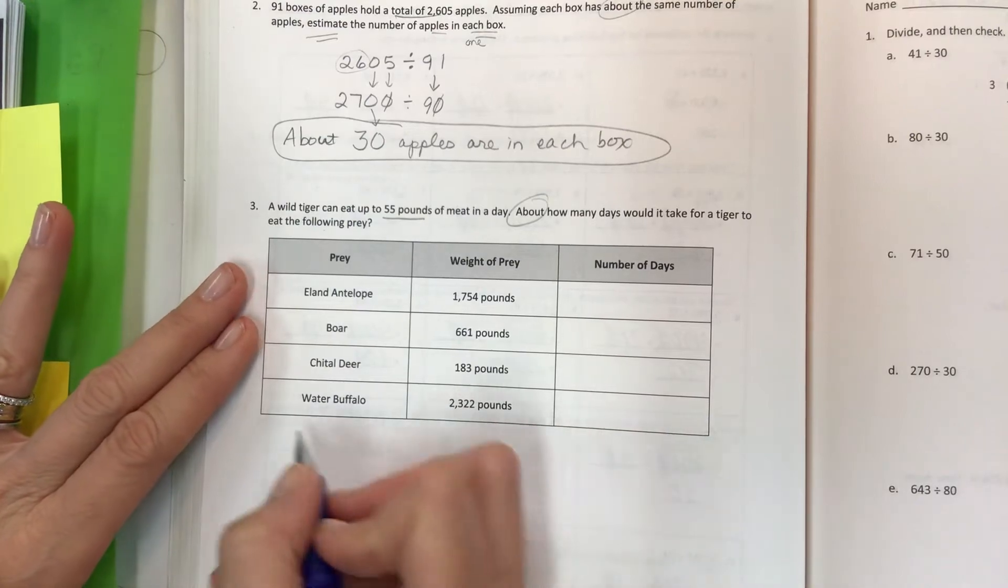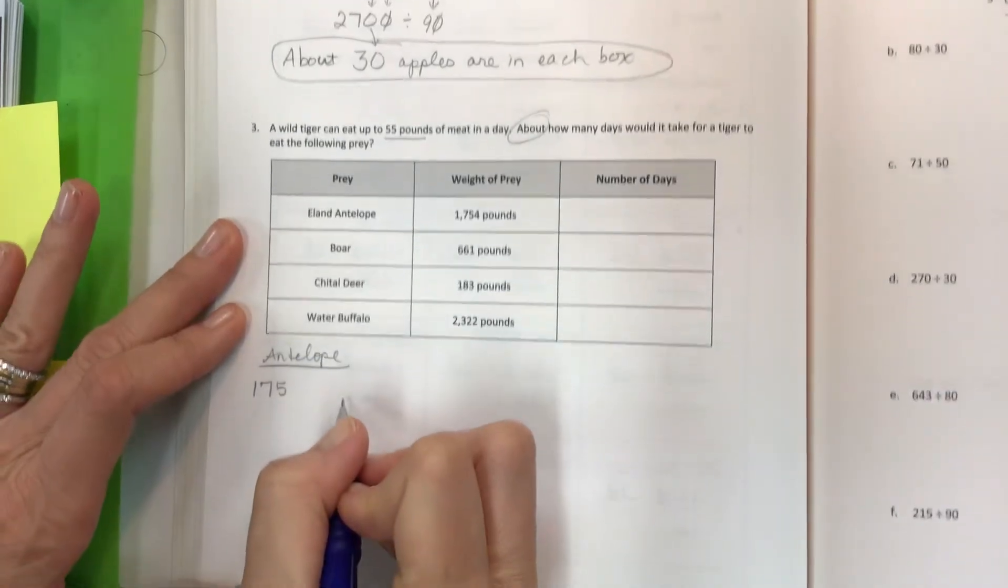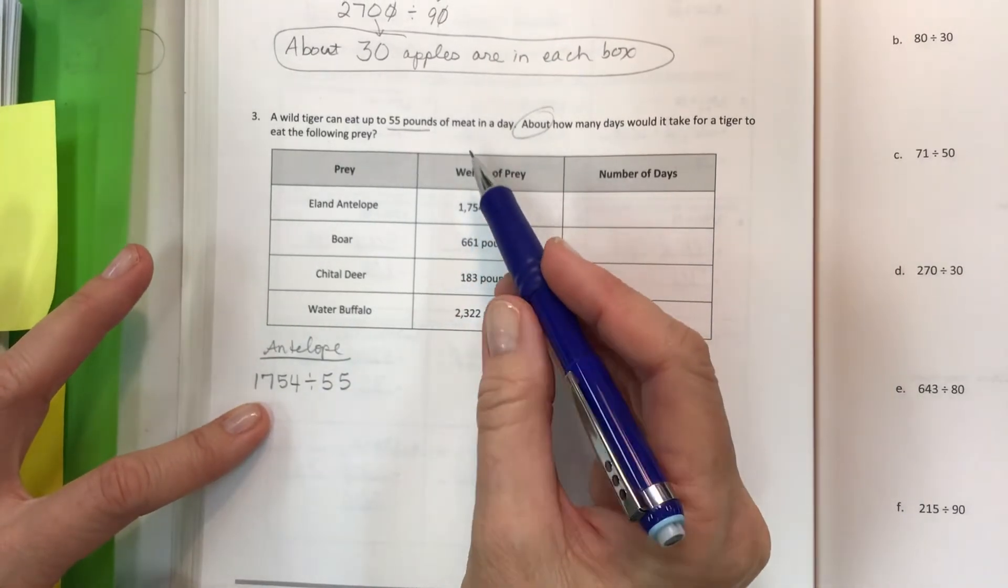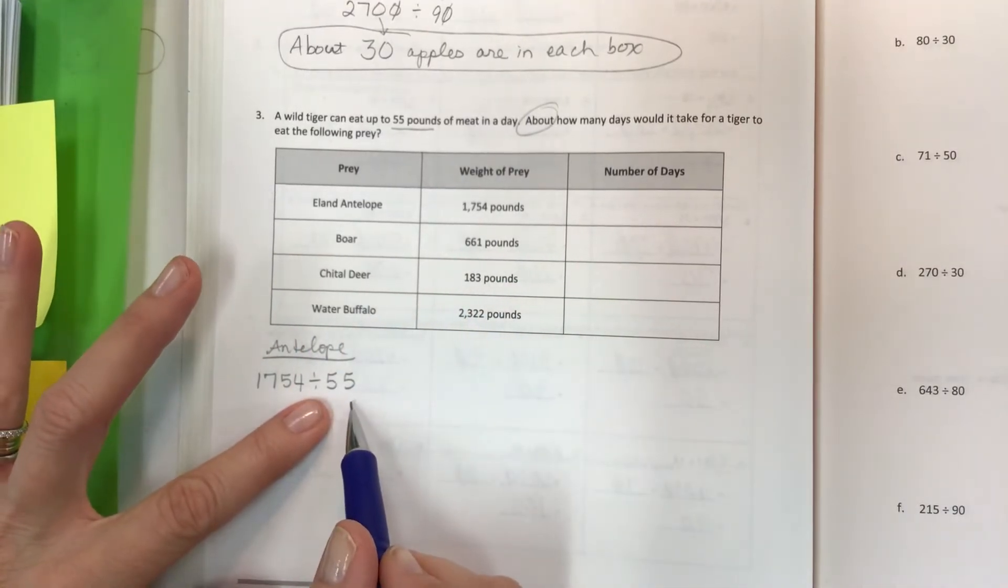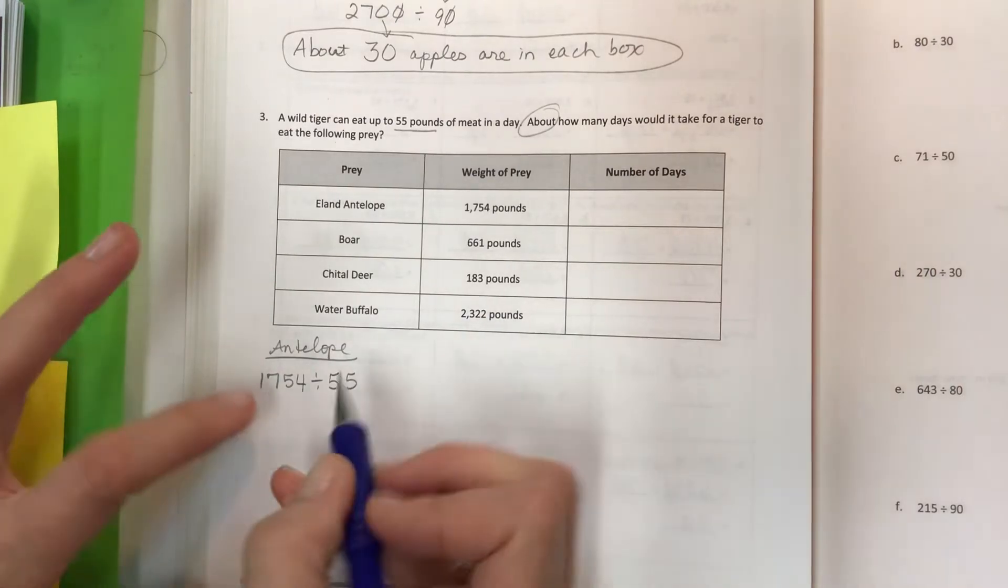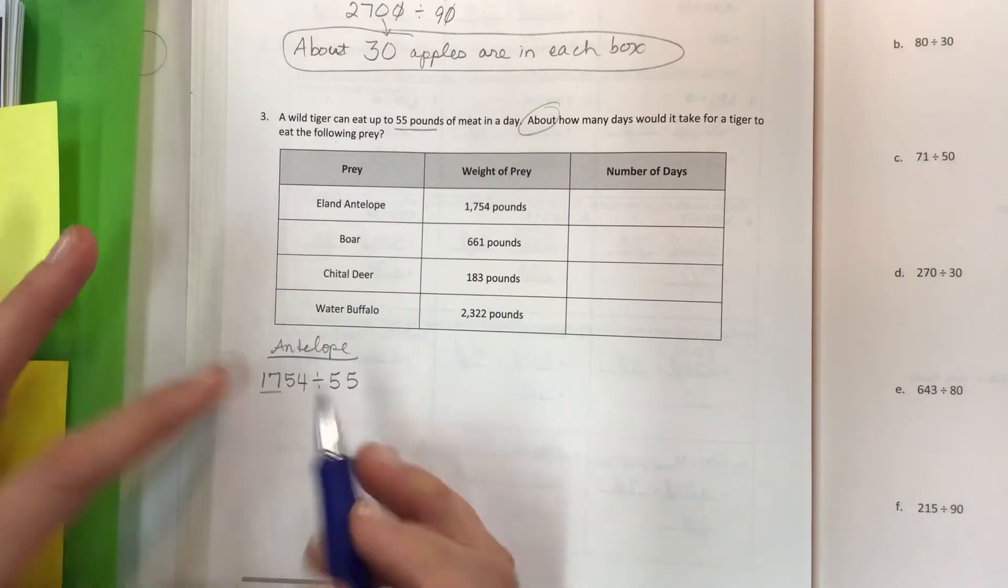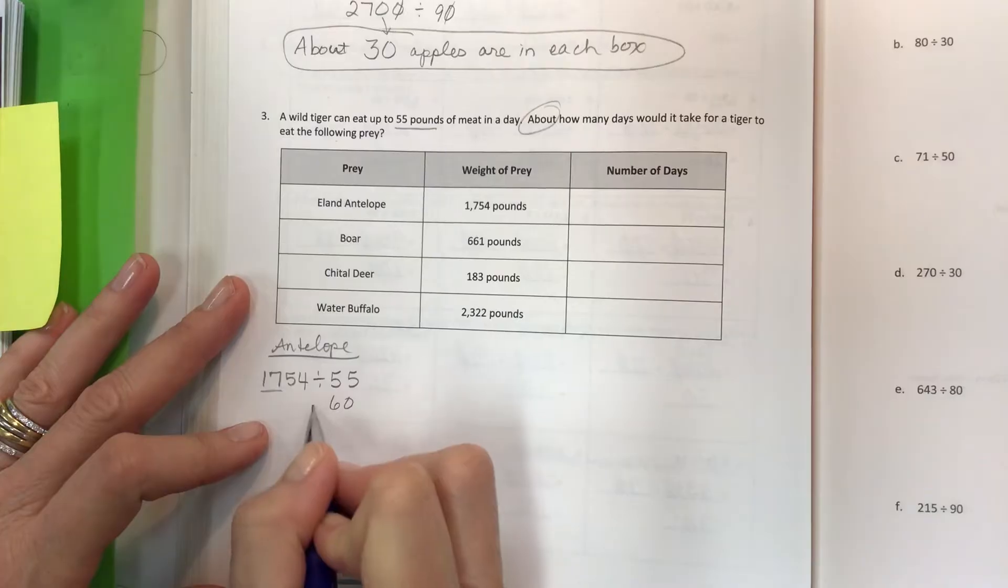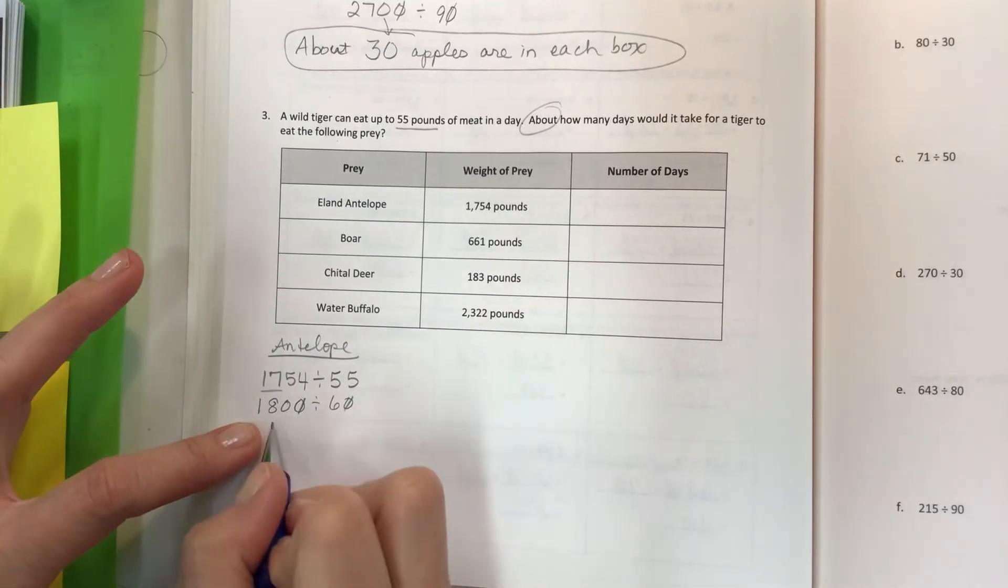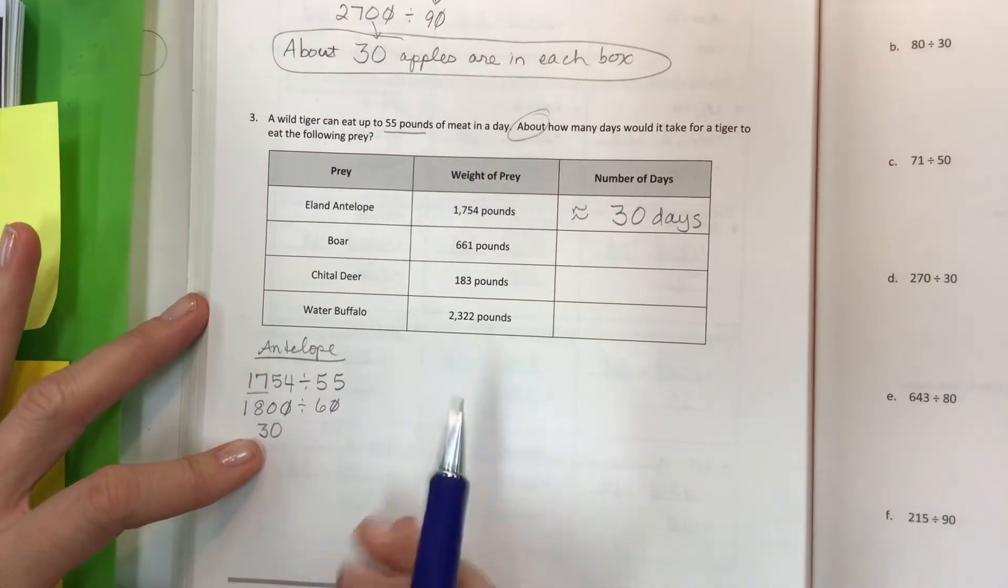Let's take the total amount of prey for each one and set up our problems, and we only need to estimate so it shouldn't be too bad. How about the antelope? I always like to label everything so you can keep it clear. Take your total - this is 1,754 - and divide it by the 55 pounds that could be eaten in a day, and we're just estimating. Now notice that it's 55, so if you were to go up or down it's going to be okay. We want to find something that's close or approximate. If I look at this 17 and I know that a multiple of 5 would be 15, but I also know that a multiple of 6 is 18. Some students will go up and some will go down - I think I'm going to round up and go to 1,800. If I offset my zeros, 18 divided by 6 is 3 and the zero comes down. This is approximately 30 days.